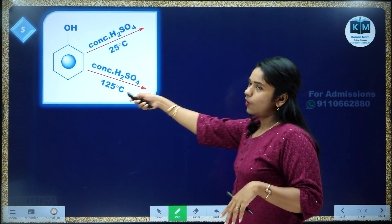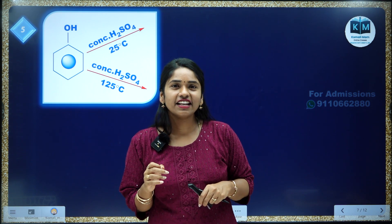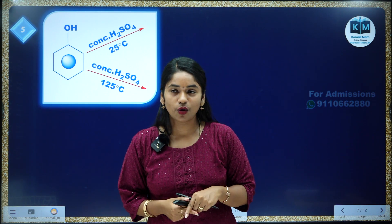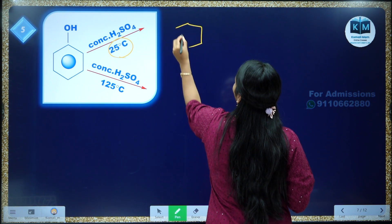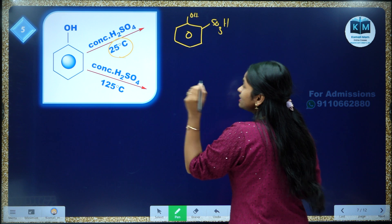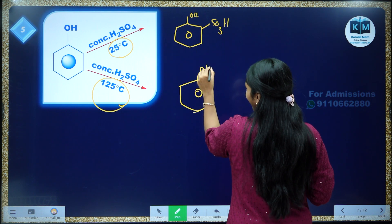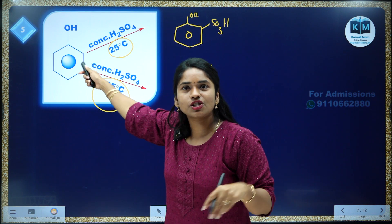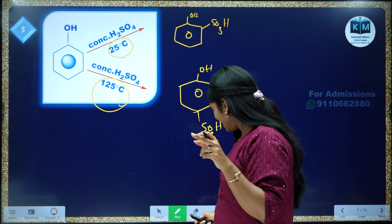Sulfonation reaction is an interesting reaction because if you change the temperature, the product formation changes. If you treat phenol with H2SO4 at 25 degrees Celsius, your product is the ortho product. But if you treat at 125 degrees Celsius (higher temperature), your product is the para product. One is ortho product at lower temperature and para product at higher temperature.